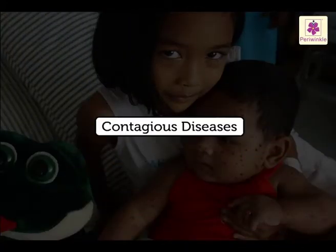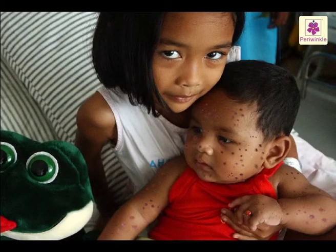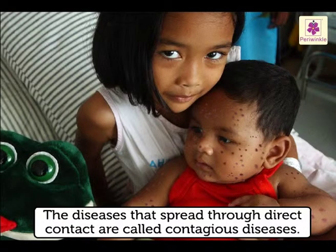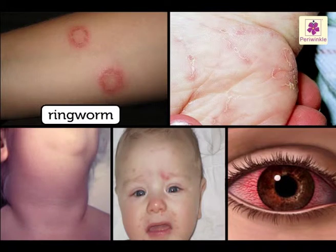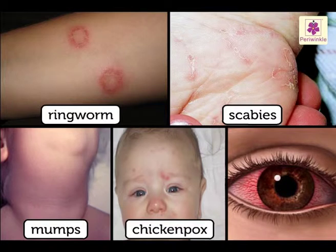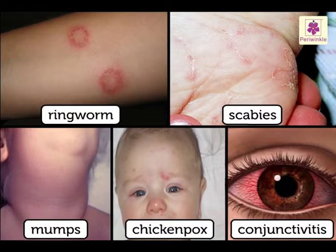Contagious Diseases. The diseases that spread through direct contact are called contagious diseases. Ringworm, scabies, mumps, chickenpox and conjunctivitis spread by touching the infected person or sharing towels or handkerchiefs with an infected person.